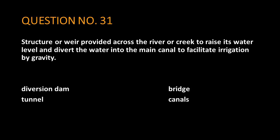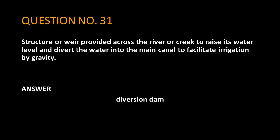Question No. 31. Structure or weir provided across the river or creek to raise its water level and divert the water into the main canal to facilitate irrigation by gravity. The answer is: diversion dam.